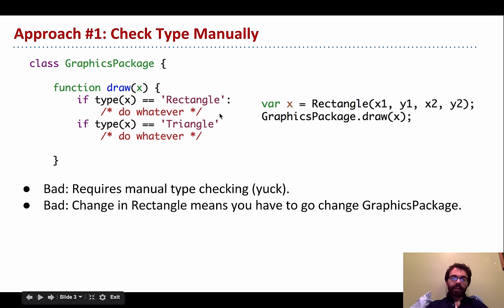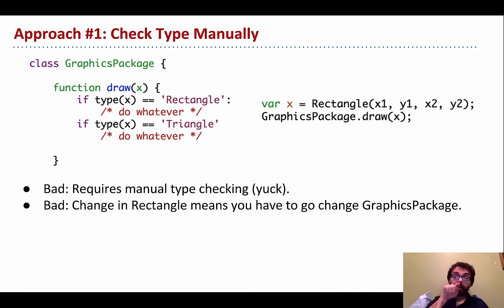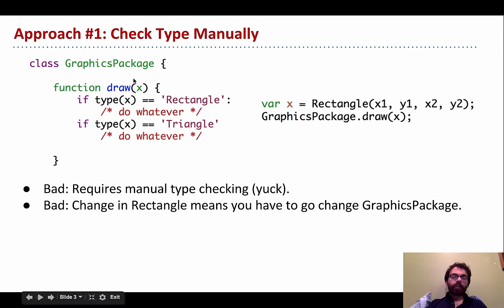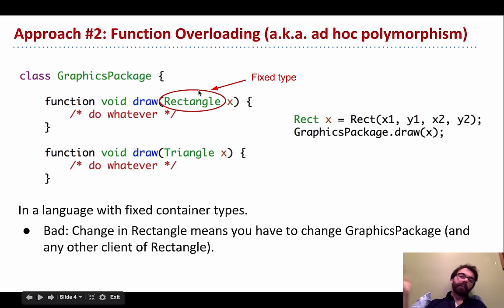Manual type checking feels like something a robot should be doing. Furthermore, suppose someone changes how a rectangle is implemented — say, representing it by a midpoint, width, and height instead of corners. That's perfectly valid, but now whoever wrote the draw package has to deal with those changes. We need a better approach.